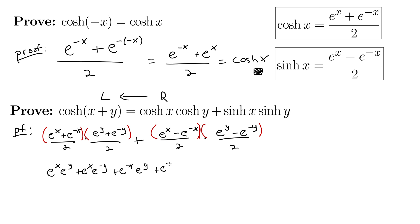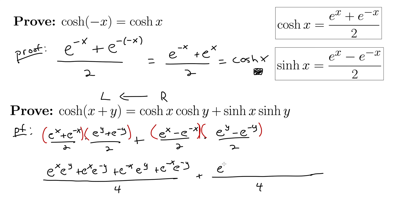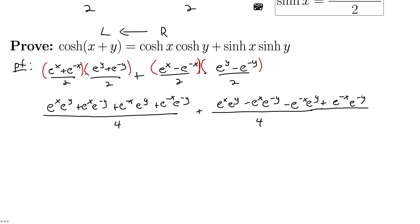Starting from the right-hand side, we expand cosh x cosh y using the exponential definitions and FOIL. That gives us e to the x e to the y, plus e to the x e to the minus y, plus e to the minus x e to the y, plus e to the minus x e to the minus y, all over 4. Then we FOIL sinh x sinh y, which is also all over 4: e to the x e to the y minus e to the x e to the minus y minus e to the minus x e to the y plus e to the minus x e to the minus y. This is looking good because we'll get some cancellation.